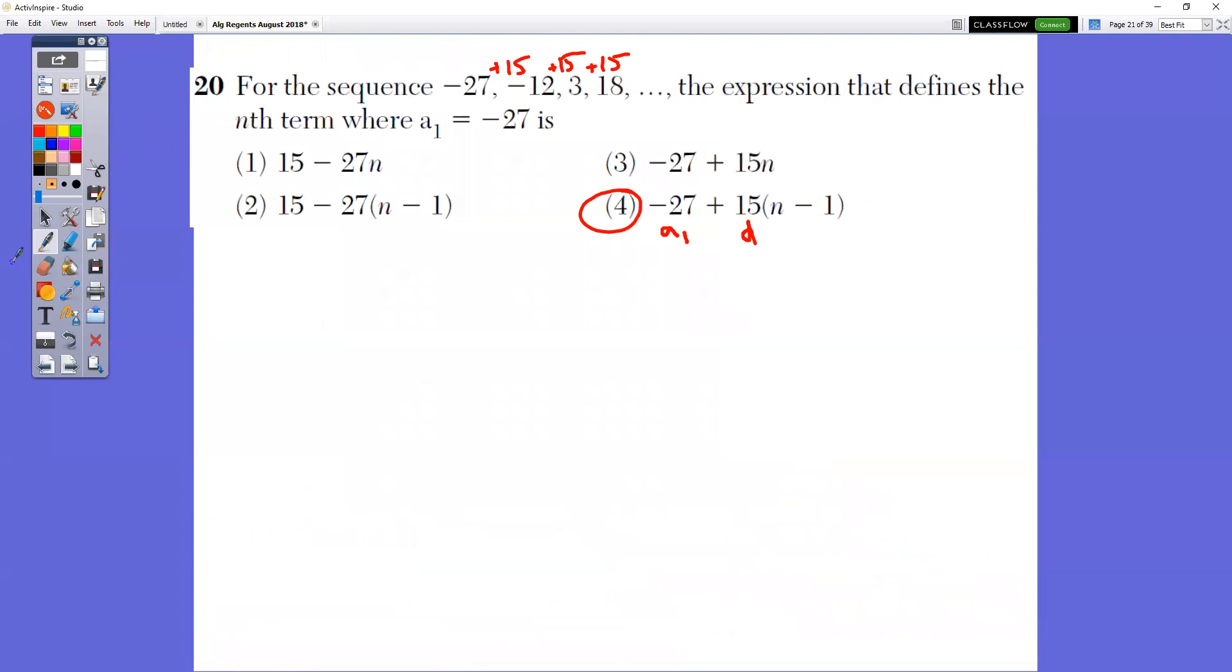In question number 20, for the sequence, negative 27, negative 12, 3, 18, the expression that best defines where the nth term is, is represented by which thing? Well, what you're doing each time, you're starting at negative 27. That's your first value. So that's your a sub one. And then you're adding 15 each time to the previous one. So you have the a sub one plus your common difference times the n minus one.